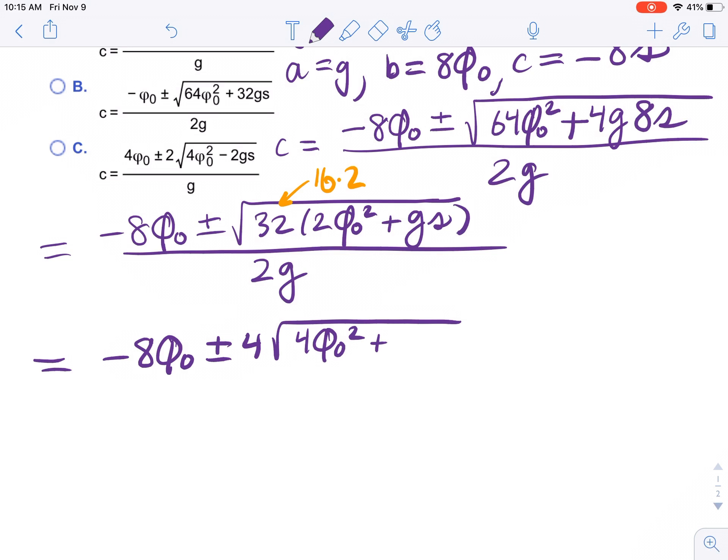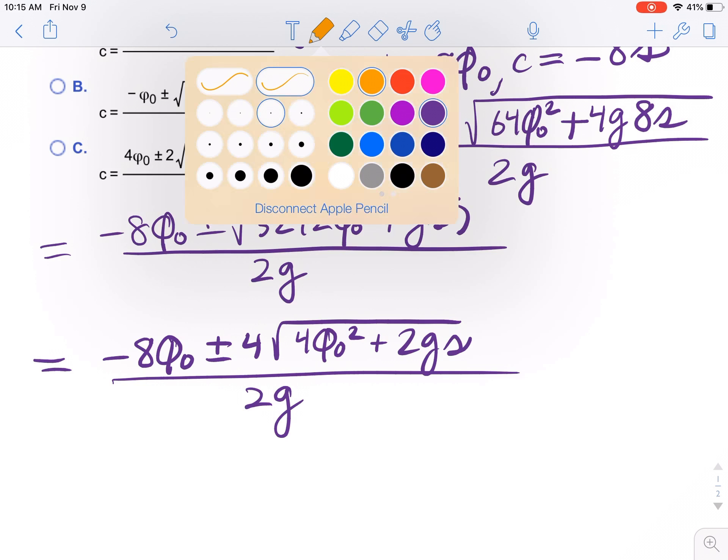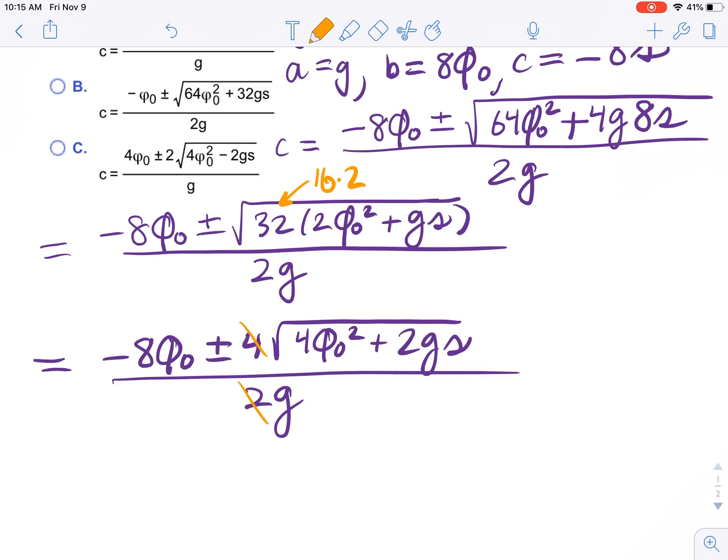And now if we just cancel these by dividing all of these by 2, we get a 4 here, a 2 here, a 2 here, and that 2 is just gone. So you just have a g in the denominator.